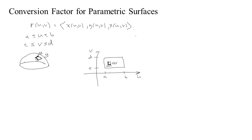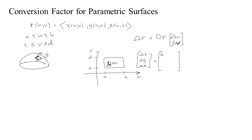We can approximate using the differential: the change in output equals the total derivative times the change in input. The change in output would be how much x, y, and z change. The total derivative matrix has entries — the derivative of x with respect to u, the derivative of y with respect to u, the derivative of z with respect to u, and then the derivatives with respect to v. This first column we call r sub u, and the second column we call r sub v.